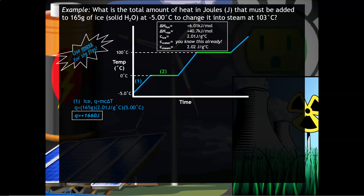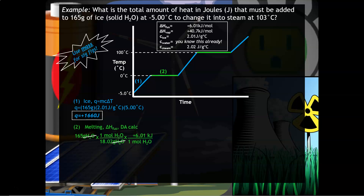Part two is a dimensional analysis calculation. We can't use Q = mcΔT because there's no change in temperature during melting. However, we know there is an energy change — energy is transferring into the substance even though temperature isn't changing. We start with the mass of water, convert to moles, then use ΔH of fusion = 6.01 kilojoules per mole, and convert to joules. The result is positive 5.5 × 10⁴ joules, expressed in scientific notation to maintain correct sig figs.